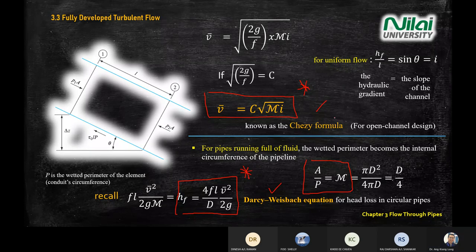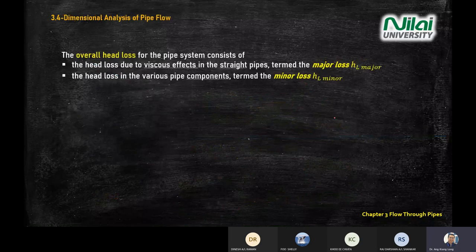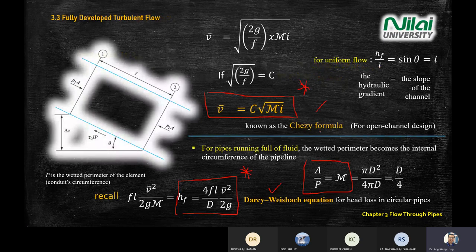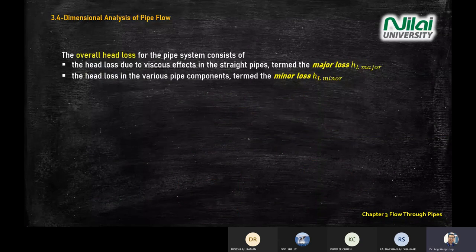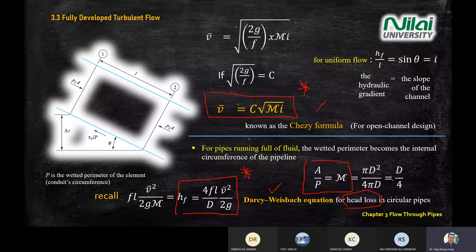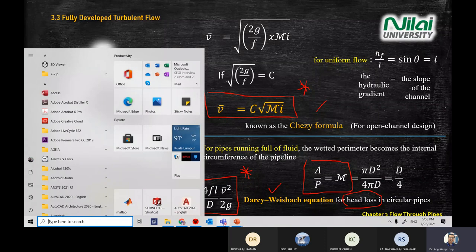To recap what's important for this second session: the Chezy formula, the Darcy-Weisbach equation, what M is, and how to calculate average velocity using the Chezy formula. In the next class, we'll continue looking specifically at head loss — major and minor head loss. Make sure you go back and revisit the slides and complete the homework.